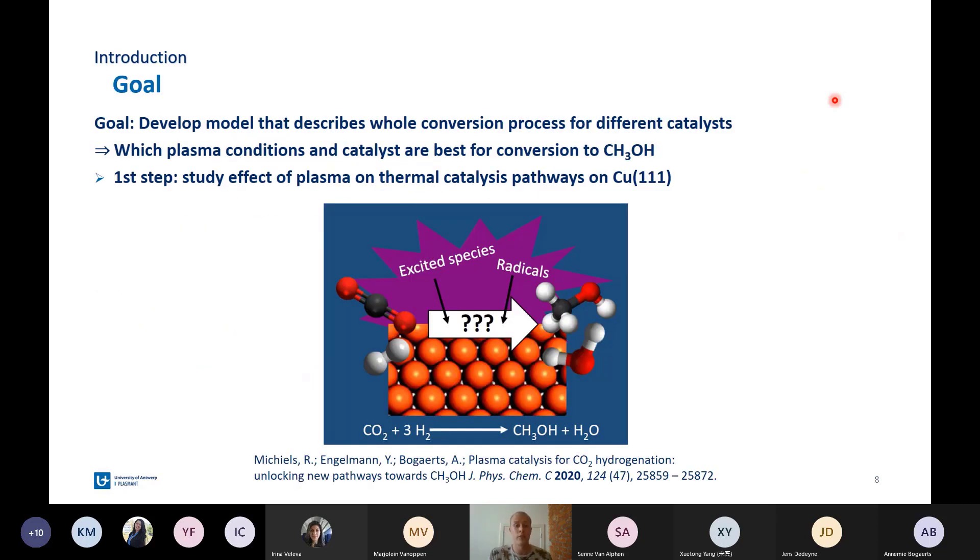The goal of my PhD is to develop a model that describes the whole conversion process of plasma catalytic conversion from CO2 to methanol for several catalyst surfaces, and we can then use this model to pinpoint the conditions and catalysts that are best for conversion of CO2 into methanol.